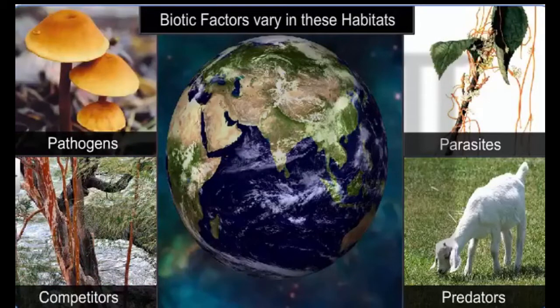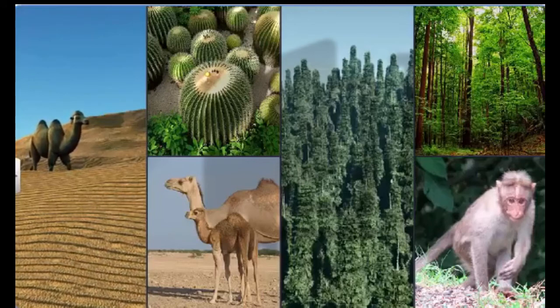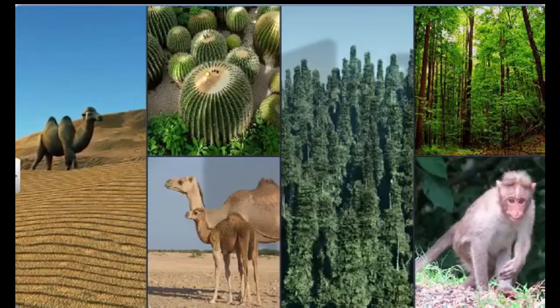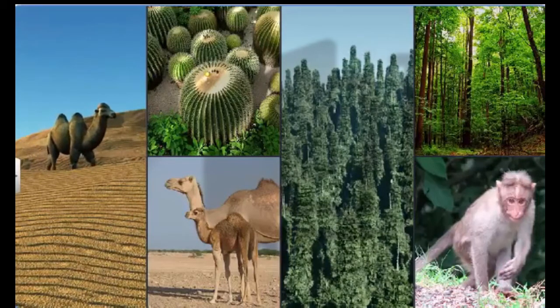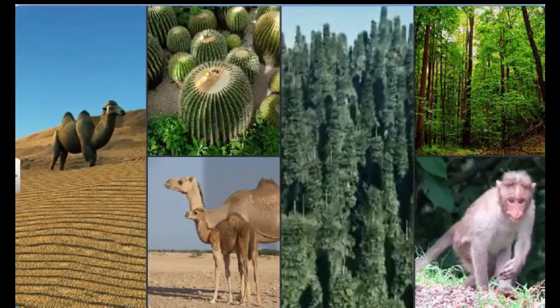This is the reason why organisms differ from habitat to habitat. For example, the plants and animals in the Rajasthan desert are different from those in the Megalayan rainforest.